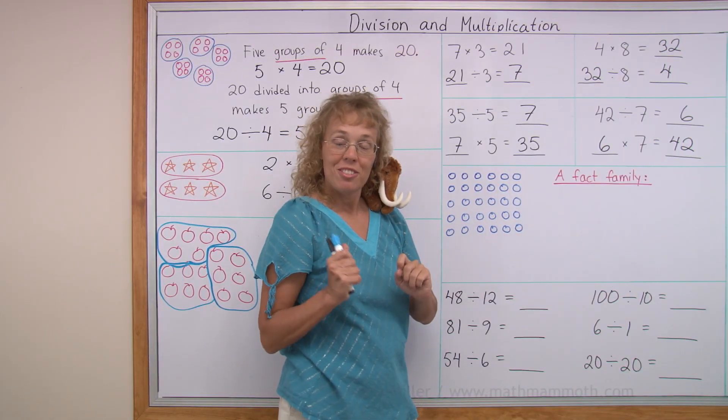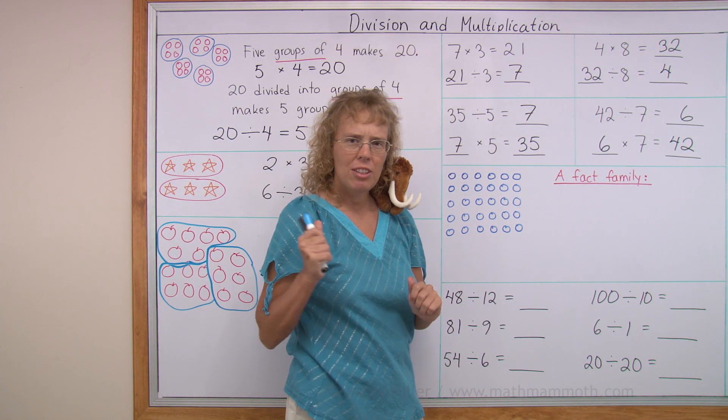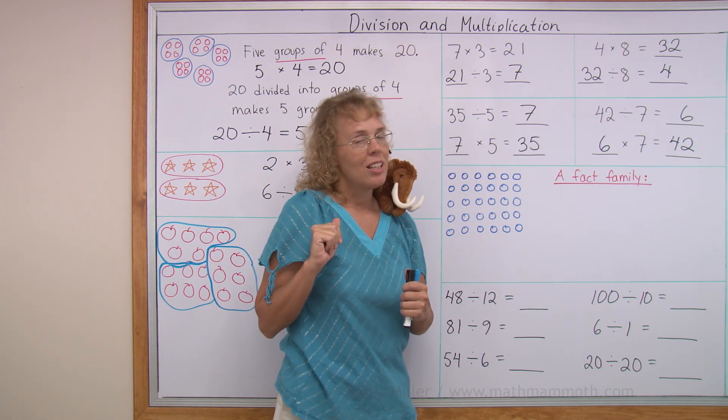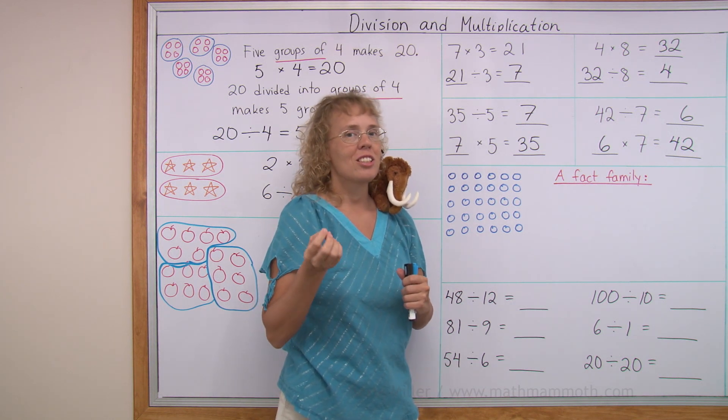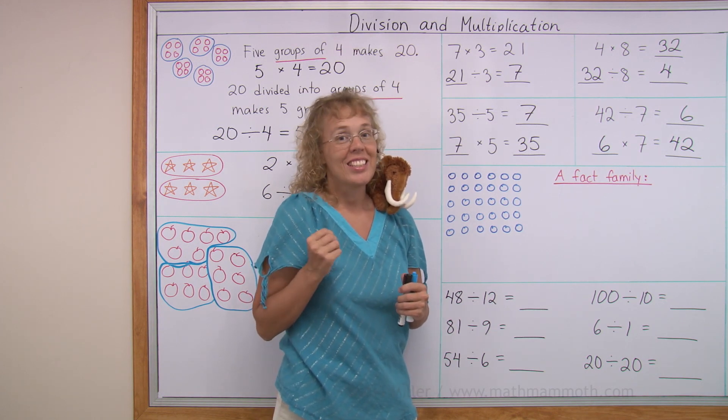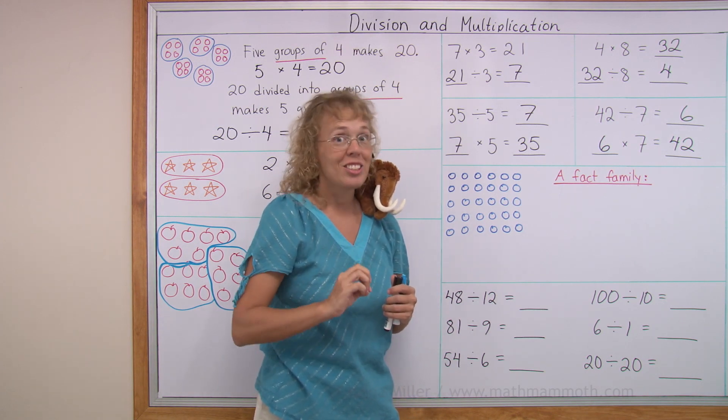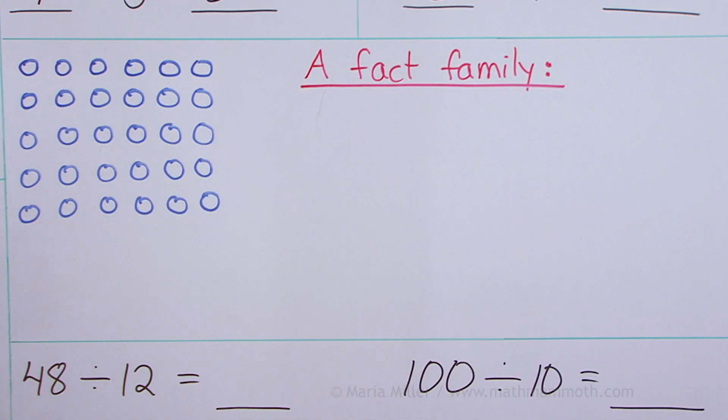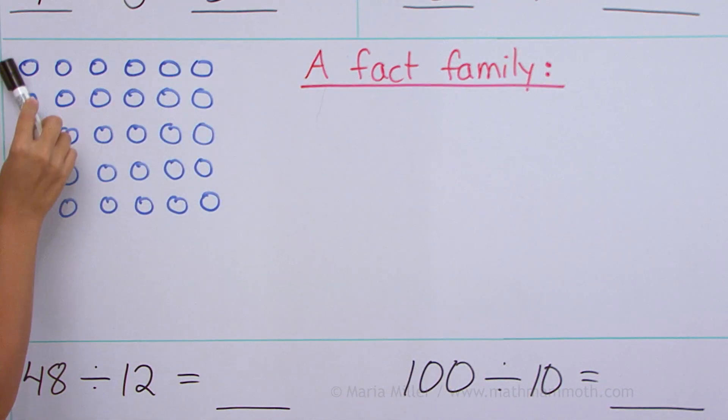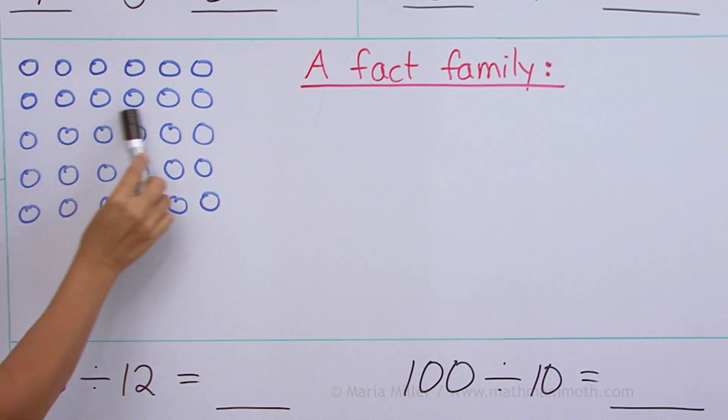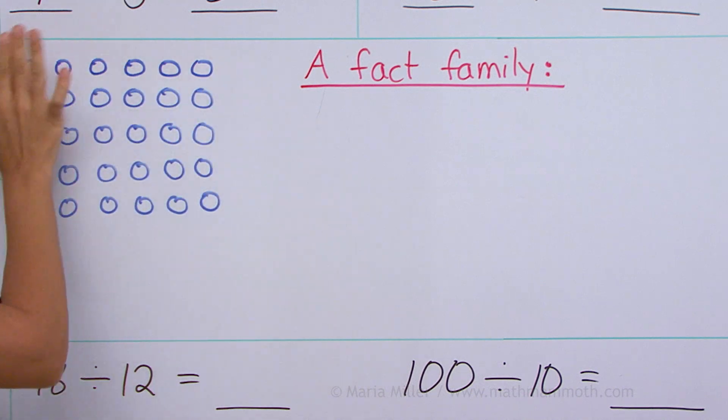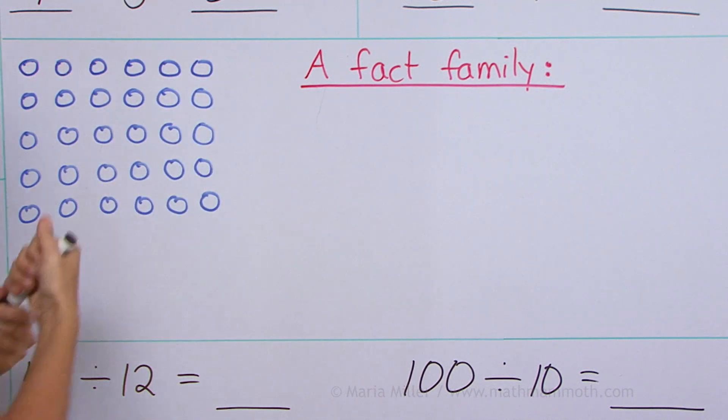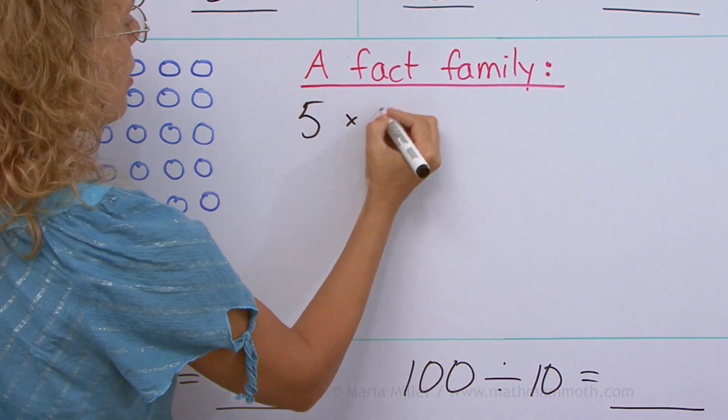Over here, we're going to write a fact family. Do you remember fact families from addition and subtraction? We always wrote two additions and two subtractions for the same picture. This time we're going to write two multiplications and two divisions for the same picture. And the two multiplications, you should know what those are going to be. I can think of this as here's a group of six, another group of six, another, another, another. I have five groups of six, thinking about the rows as groups. Five groups of six makes 30.